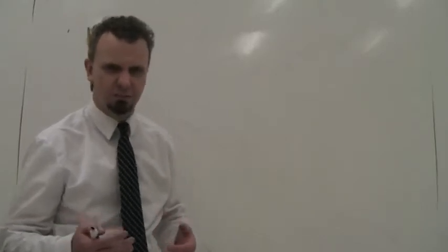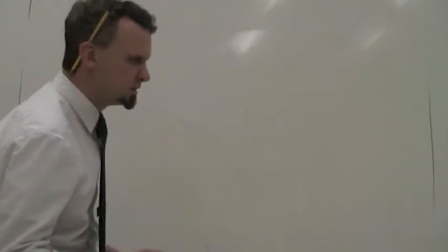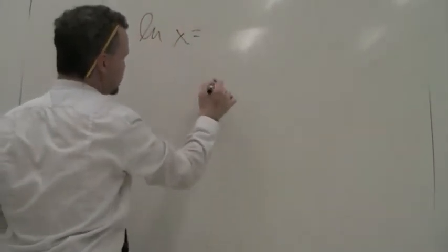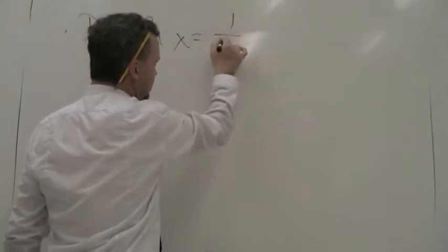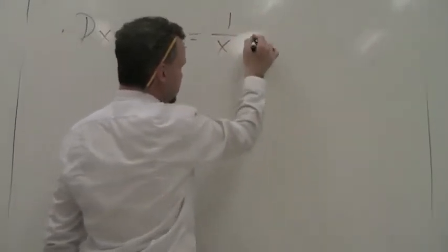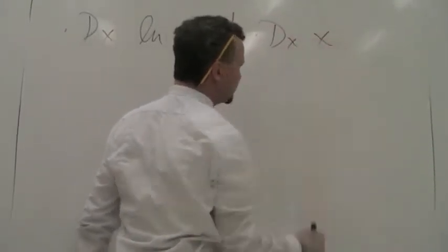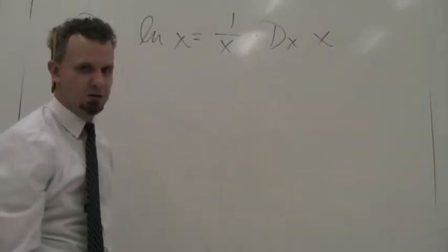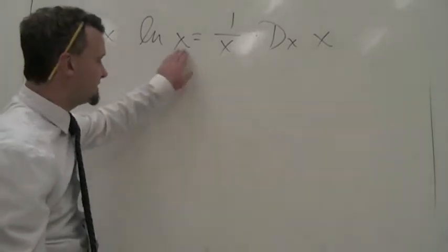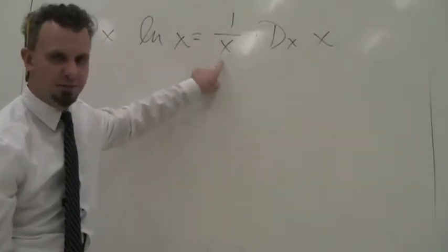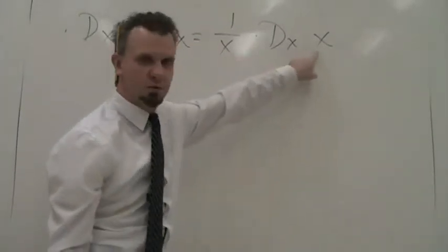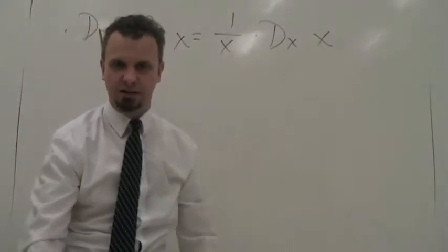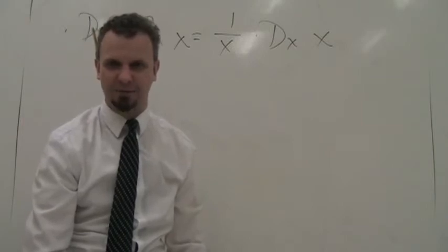All the other rules we can prove based on this rule. The derivative of the natural log function is 1 over x times the derivative of the argument of the log — that's the chain rule part. To derive the natural log of x, you write 1 over the argument of the log times the derivative of that argument. There's your chain rule part. Let's do some problems.